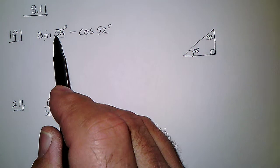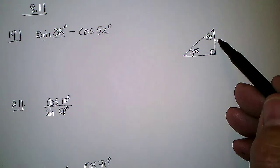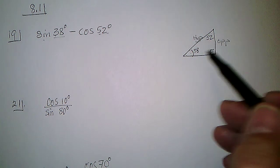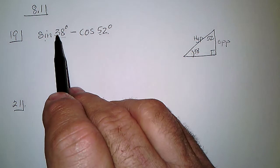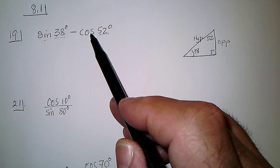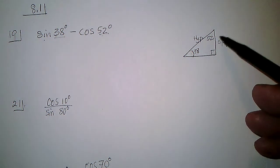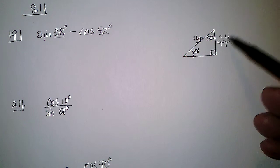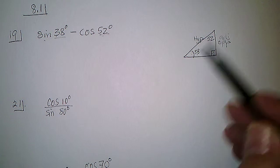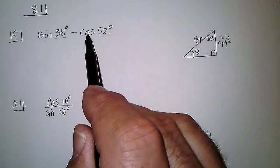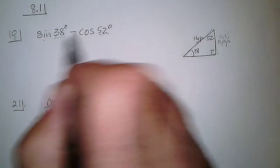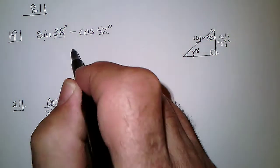So the sine of the 38, which would be opposite this side and the hypotenuse, the opposite of the hypotenuse is the sine for the 38, but the cosine, which is adjacent to hypotenuse of the 52, well this becomes the adjacent on the cosine to the same hypotenuse. And so the sine of 38, this side to this, and the cosine of 52 is this side to this, so these are the same. And so if you subtract two equal quantities, you get zero.